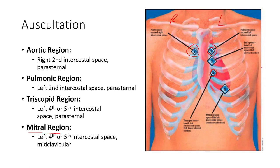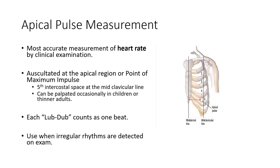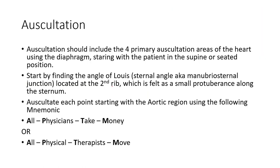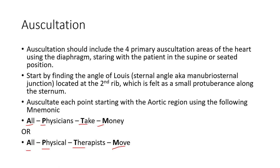Our mitral valve - we listen to that at the fifth or fourth intercostal space at the midclavicular line. So we go in order: aortic, pulmonic, tricuspid, mitral. You can remember this by the mnemonic 'all physicians take money' - aortic, pulmonic, tricuspid, mitral - or 'all physical therapists mobilize.'